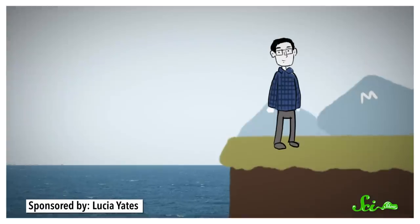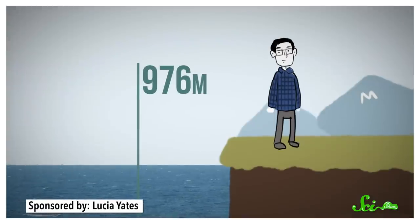Sea level might sound like a pretty simple concept—it's the height of the sea. But coastal water levels are always shifting. And even here in Missoula, Montana, I can confidently say that I'm 976 meters above sea level. Which, what does that even mean? There's no ocean for hundreds of kilometers!